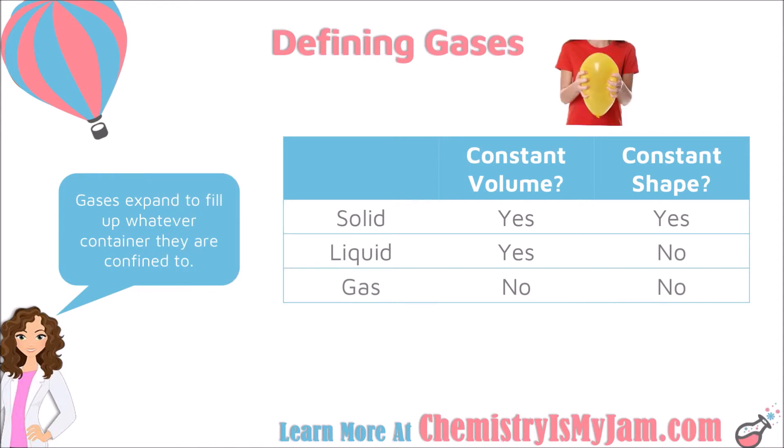Gases are really quite different. Gases are very compressible, meaning that you can squish them — you can squeeze them into tighter spaces, make them take up less space, or if you put them into a volume where there is more space available, they will expand to fill that volume. Gases do not have a constant volume and they do not have a constant shape. So this is one of the ways that we identify solids, liquids, and gases: by asking whether the volume is constant or whether the shape is constant.